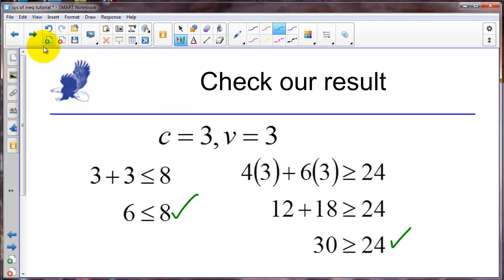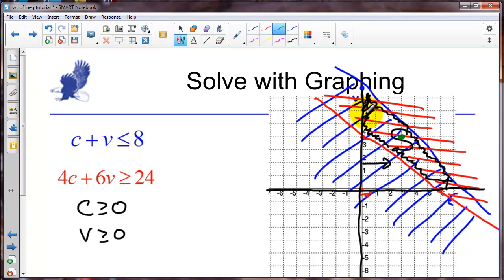So that's a solution. Now there are an infinite number of solutions we could pick. Now since this is a real world application. We would only be picking the solutions in here that are on the grid. Because we need an integer number of cars and vans. So as we can see though there are lots of solutions that we could pick.